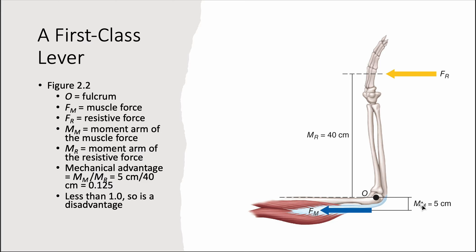For the mechanical advantage to reach 1.0 or higher, the muscular moment arm would need to be longer to match that of the resistive force. Our body is in a disadvantage, and we have to work harder to move that resistance. That's why tricep pushdowns are such a challenging movement.